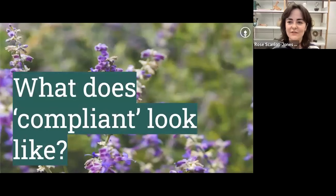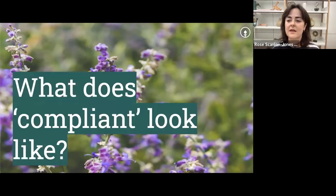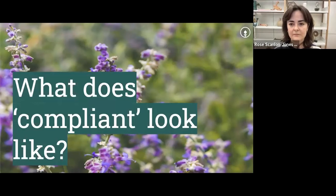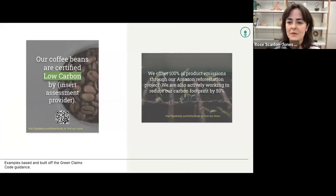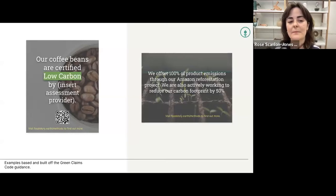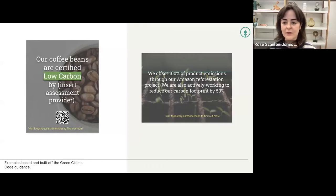Now that we're familiar with the context of labels, we've seen some examples, and we understand some regulatory background, we wanted to share some solid examples — some are made-up ones purely for illustration, and some are how our clients have actually used our carbon labels and the data we provide to help build their marketing claims. We also have a whole separate webinar on how to market your sustainable claims that goes into a lot more detail — we'll include all of this in the follow-up notes.